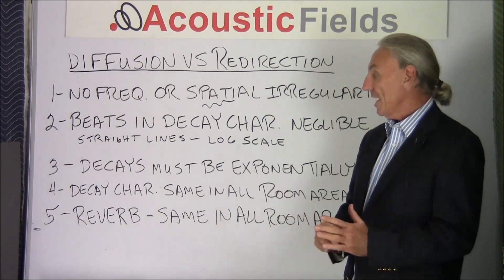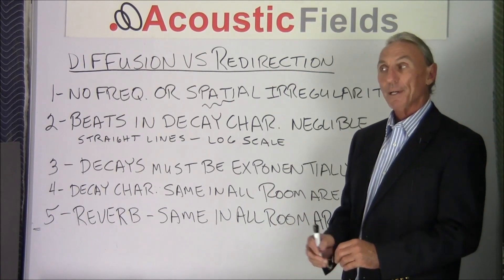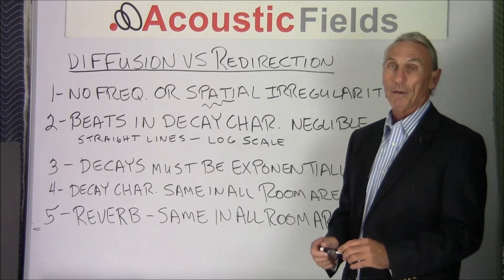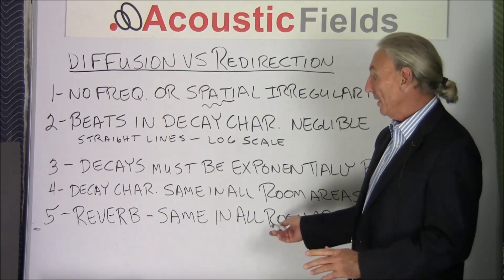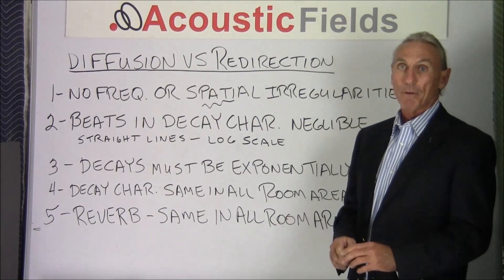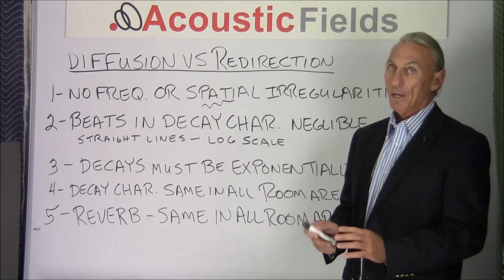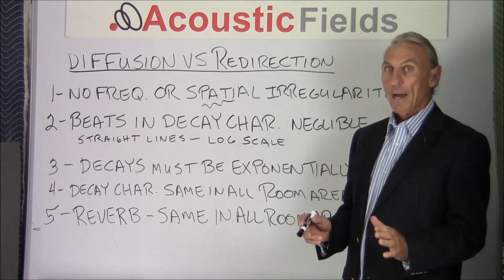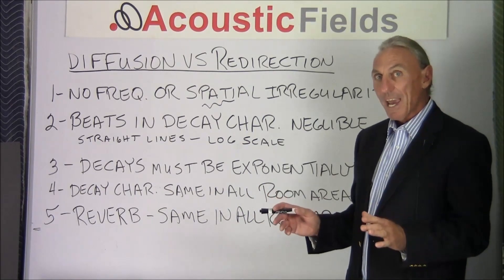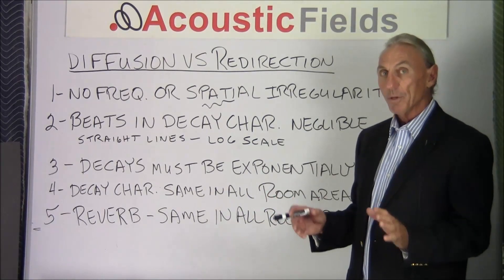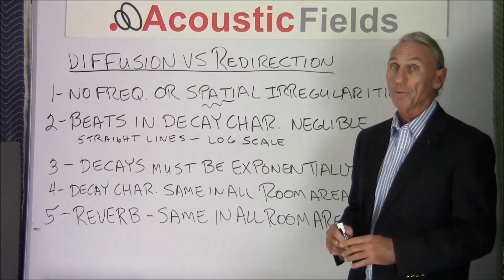The fourth characteristic: the decay characteristics must be the same every place in the room — you can't have one area with a higher or lower decay rate than another. And finally, the fifth: the reverb time must be the same in all parts of the room. These are the five criteria you must have in order to have a diffused sound field.